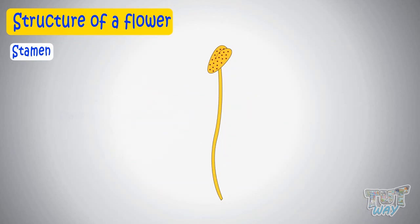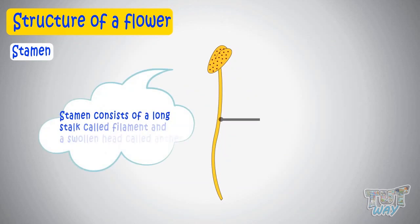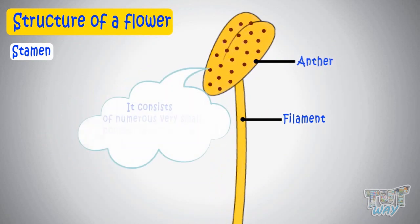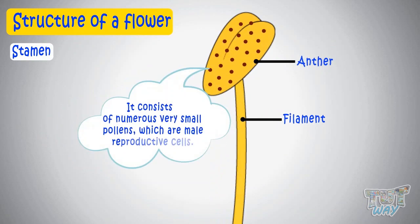Stamen consists of a long stalk called filament and a swollen head called anther. It consists of numerous very small pollens, which are male reproductive cells.